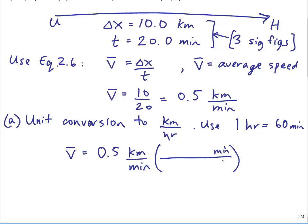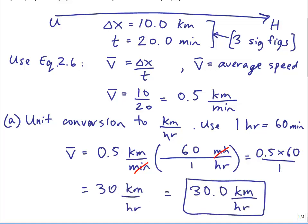minutes on the top and hours on the bottom. So 60 minutes is one hour, and that will make the minutes cancel, and you'll have hours on the bottom. So 0.5 times 60 equals 30 kilometers per hour. And then we can write it 30.0 there to get it to three significant figures.